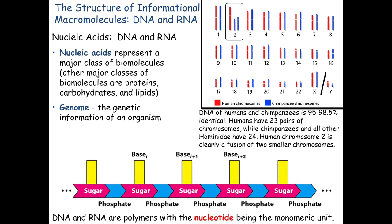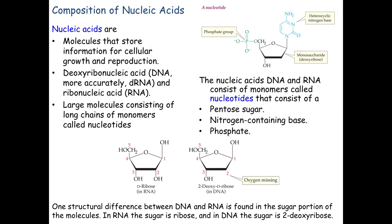The repeating unit — sugar, phosphate, and the attached base — is called a nucleotide. The main difference between nucleotides and nucleosides is the presence or absence of a phosphate group. If you just have the base and the sugar connected, we call that a nucleoside. If we attach one or more phosphates, we call it a nucleotide. It's a very simple definition.